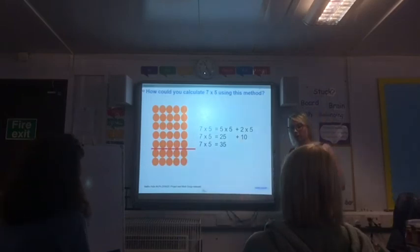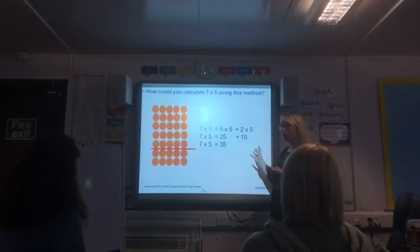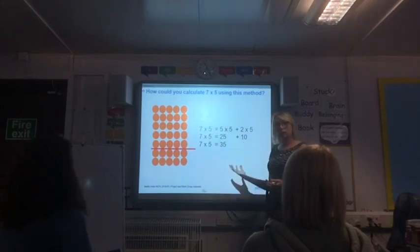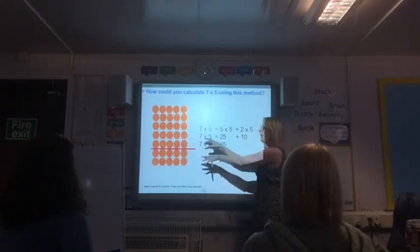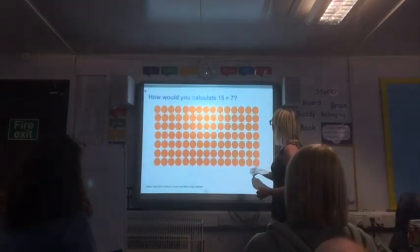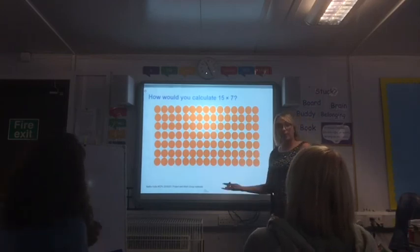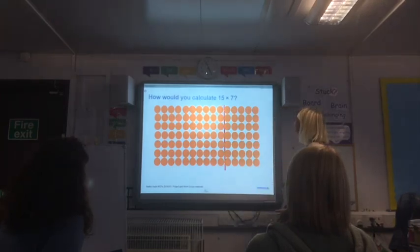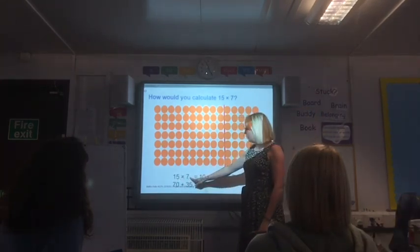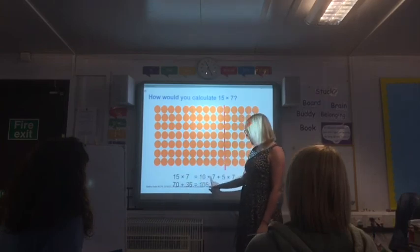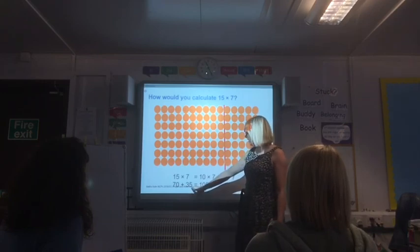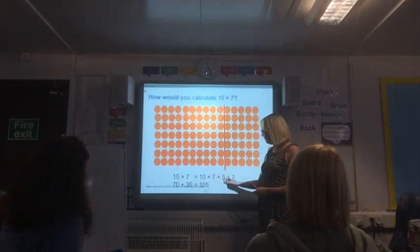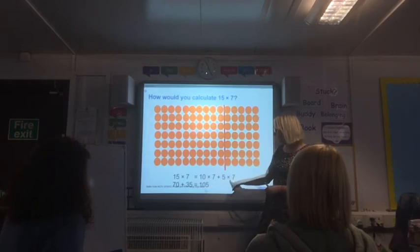What do you notice that's different about how I've presented my equation this time? The total — the seven fives — I've put it on this side. As long as it goes on the other side of the equals symbol, we can represent our calculations that way. The answer doesn't always have to be at the end. How could we calculate 15 sevens using our partitioning method? Ten sevens and five sevens. So 15 sevens equals 10 sevens plus five sevens. Ten sevens is 70, five sevens is 35, and 70 plus 35 is 105. By breaking down what we know, 15 sevens is made up of 10 sevens and five sevens — we know both, and we can add those together.